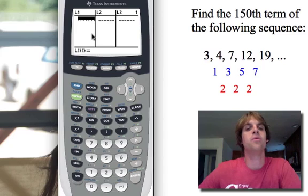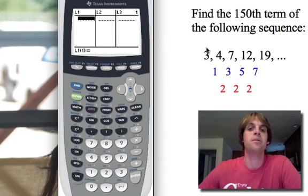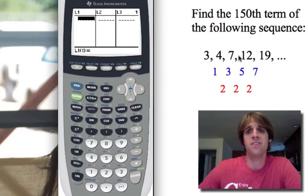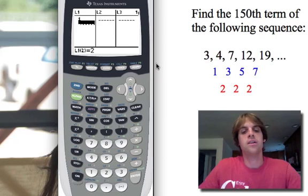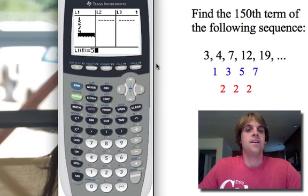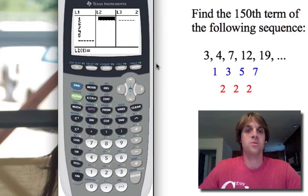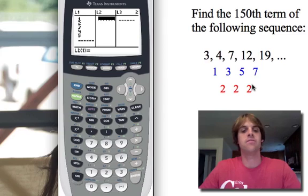The first column we want to go ahead and just put the number term. For instance, we've got five terms that we already know. So we're just going to enter 1, 2, 3, 4, 5 right in order. And then once we've got that entered, in the second list we will enter the actual data. So the first term is 3, 4, 7, 12, 19 for instance.